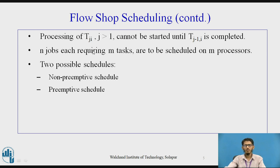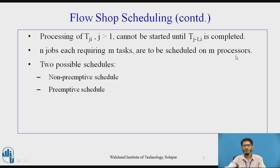The processing of a task tji, where j is greater than 1, cannot be started until task tj-1,i is completed. That is, for a particular job, if we have two tasks, the previous task should be completed first and then the next task can be executed. So n jobs each requiring m tasks are to be scheduled on m processors — this is our Flow Shop Scheduling Problem.